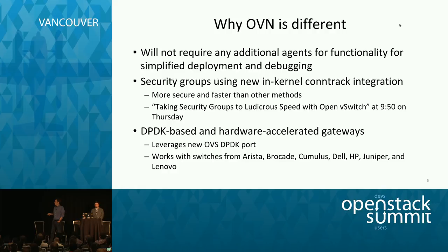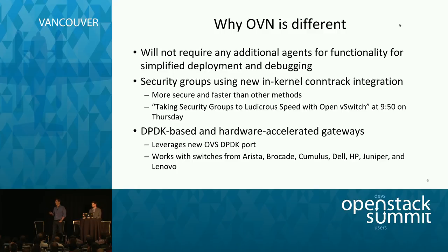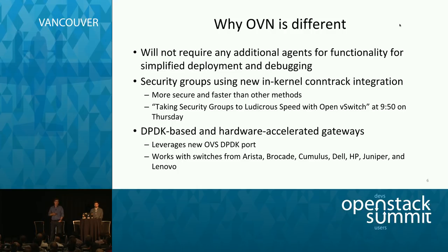For gateways, we'll have a DPDK-based gateway as well as hardware-accelerated ones. We've been working on an OVS DPDK port that delivers impressive performance numbers for physical-to-physical links, targeting near-native hardware speeds using commodity processors. OVN also uses the VTEP schema published for OpenVSwitch a couple years ago, which allows physical top-of-rack devices to participate in logical networks. We'll be able to work with switches from Arista, Brocade, Cumulus, Dell, HP, Juniper, and Lenovo.